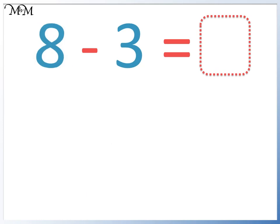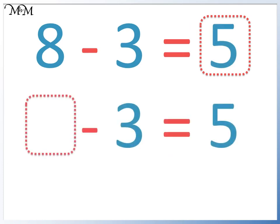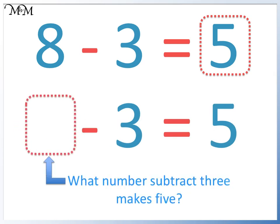We had 8 take away 3 equals 5. Instead, we may have a missing number here. This is asking which number subtract 5 makes 3. We can start at 5 and add 3 more. We get 8.